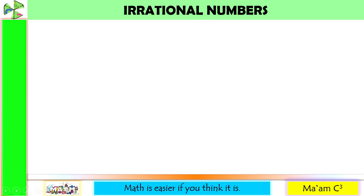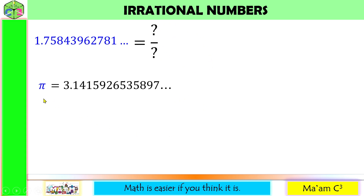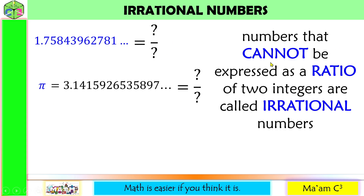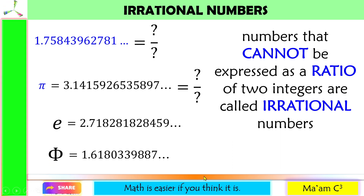Now, how about the irrational numbers? Let us recall our answers — we have this one and pi. Can you think of two numbers you can divide so that it equals this number? None. Pi is approximately equal to this number, and the ellipsis means it has no ending. Can you think of two numbers you can divide that is equivalent to the value of pi? None. Numbers like this are called irrational numbers — numbers that cannot be expressed as a ratio of two integers. There are other famous irrational numbers aside from pi: Euler's number e, approximately equal to this value, and the golden ratio, denoted by the Greek letter phi, approximately equal to this value. Many square roots, cube roots, and others are also irrational numbers.